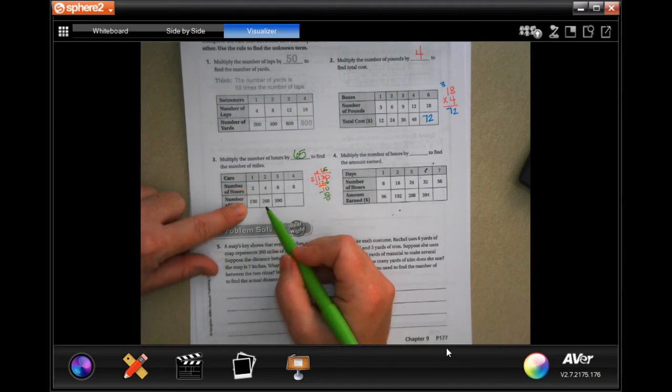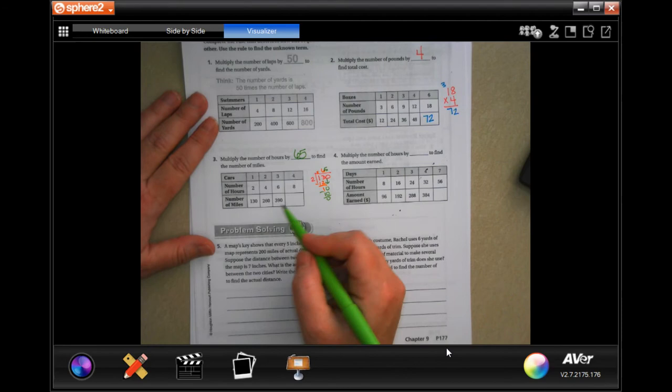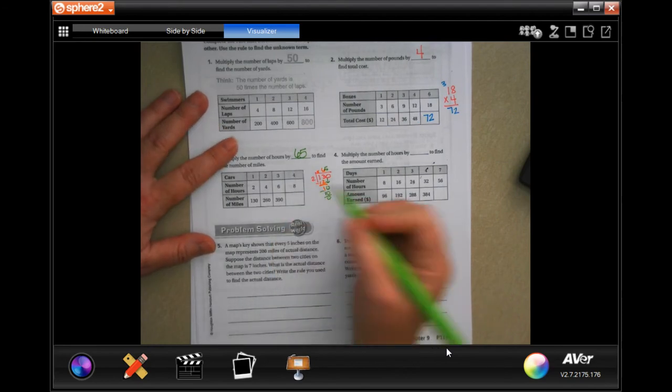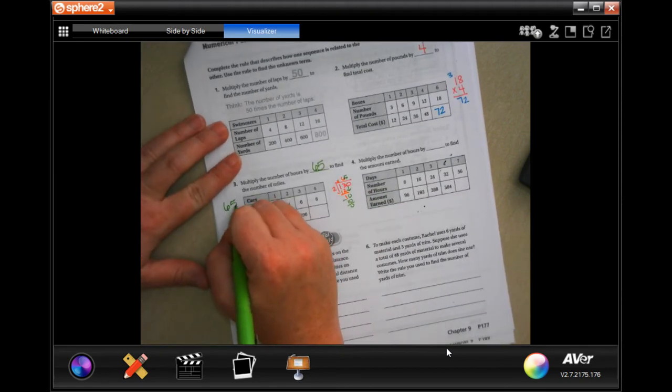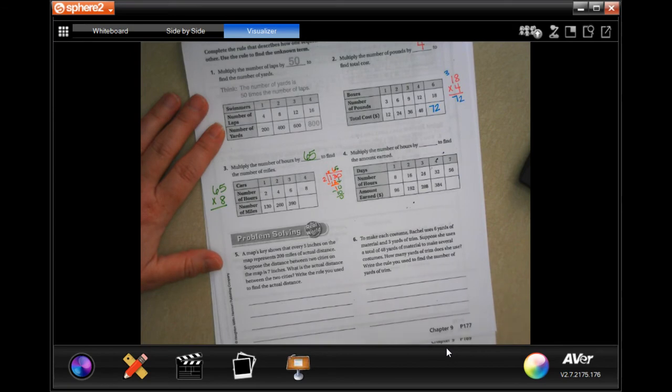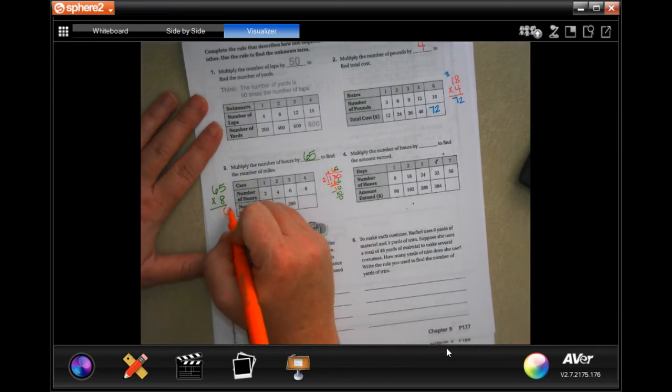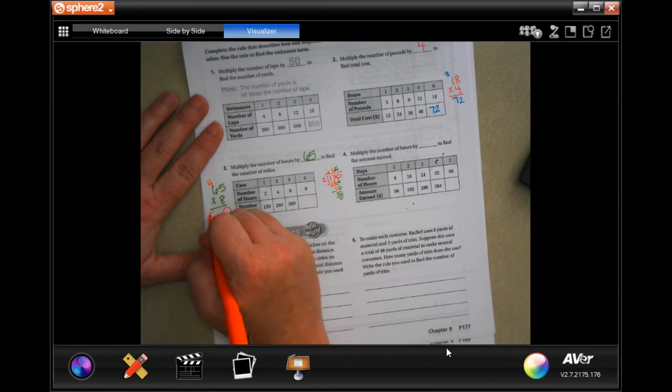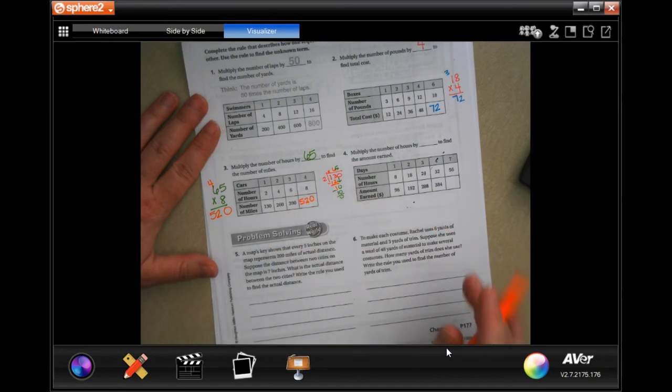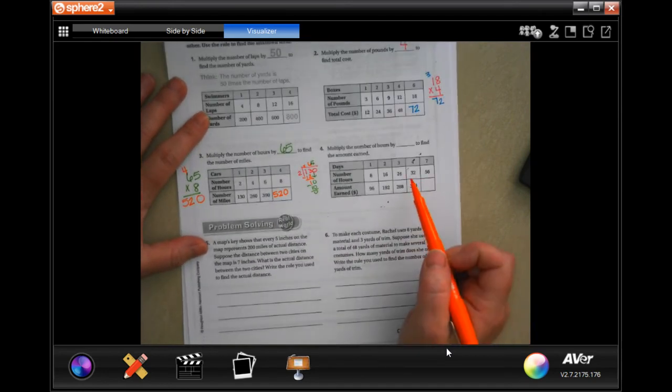Four times 65 would be 260. There's a pattern there. So now I'm going to multiply that eight by 65 to find 65 times eight. Eight times five is 40, carry the four. Eight times six is 48 plus four equals 52, so 520.